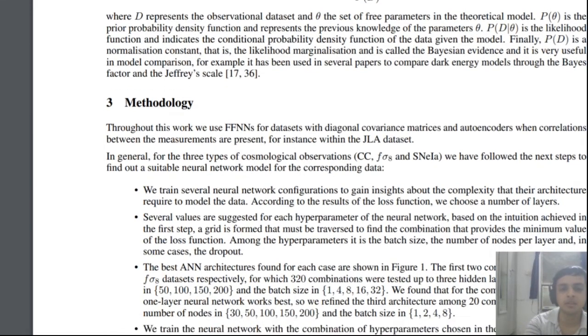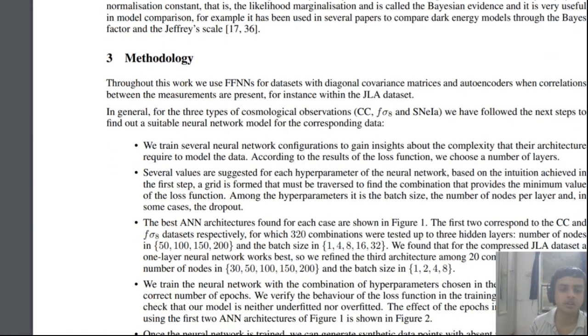The paper basically just uses feed forward neural networks, FFNN, and they took the measurements from the JLA data set. They took all these parameters that we discussed about - this cosmic chronometers, f sigma eight.